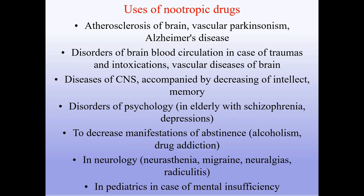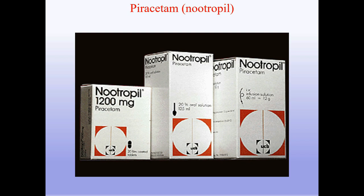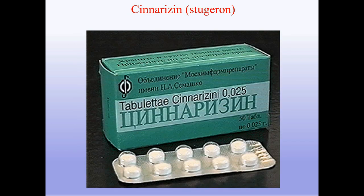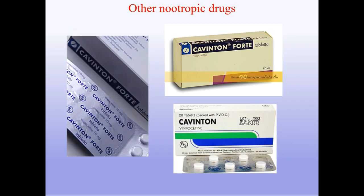Uses of nootropic drugs: atherosclerosis of brain, vascular Parkinsonism, Alzheimer's disease, disorders of brain-blood circulation in traumas and intoxications, vascular diseases of brain, diseases of CNS accompanied by decreasing intellect, memory disorders, disorders of psychology, elderly with schizophrenia, depressions, abstinence reduction in alcoholism and drug addiction; in neurology — neurasthenia, migraine, neuralgia, radiculitis; in pediatrics for mental insufficiency. Examples include piracetam (Nootropil), cinnarizine (Stugerone), and cerebrolysin.